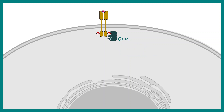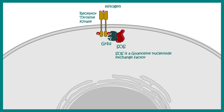GRB2 can further interact with SOS protein. SOS protein, otherwise named as 'son of sevenless', which was found in Drosophila, is actually a guanosine nucleotide exchange factor. And it helps in GTP exchange.